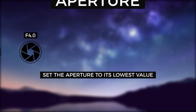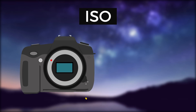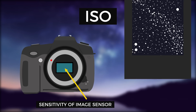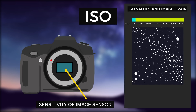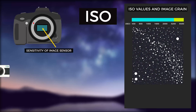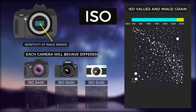Now comes ISO, or the sensitivity of your image sensor. The higher the ISO, the more noise and grain will enter the image, so finding your maximum ISO without too much noise will be important. This is dependent on the comfort level and your camera's ability.